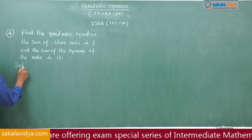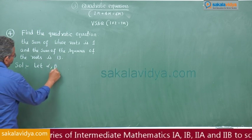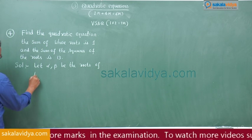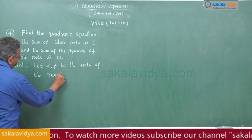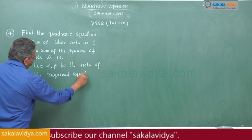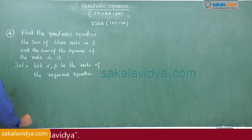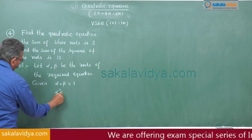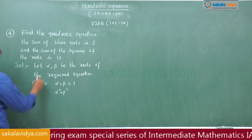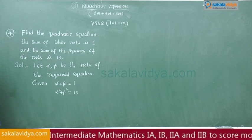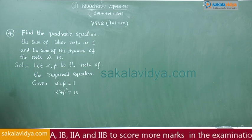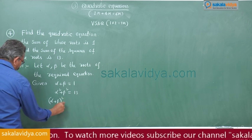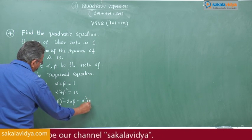Let alpha, beta be the roots of the required equation. Given: alpha plus beta equals 1, and alpha square plus beta square equals 13. Now, alpha square plus beta square equals 13 means we use the formula: alpha plus beta whole squared minus 2 alpha beta equals alpha square plus beta square.